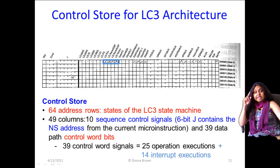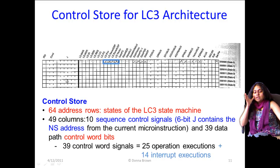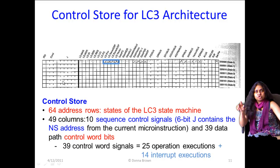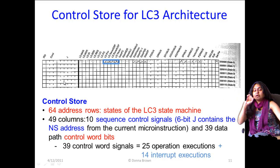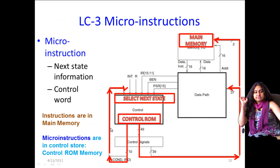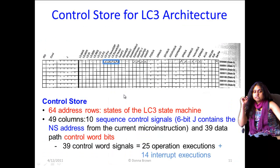Some control signals do not control the data — they control the control unit itself. These are signals that tell the finite state machine where to move the pointer next. There are 10 of these kinds of signals.